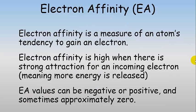Electron affinity is sometimes a difficult periodic trend to picture. It is a measure of an atom's tendency to gain an electron — in other words, how much does it want another electron? Sometimes they don't want another electron at all; it actually makes them less stable and you have to add extra energy to get them to take an electron. Sometimes they really do want one, and when you give them an electron they release energy and they're more stable.